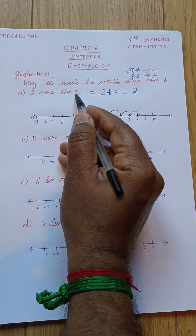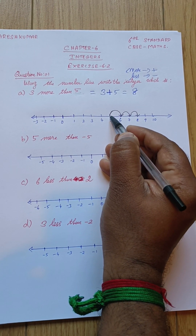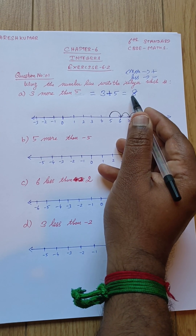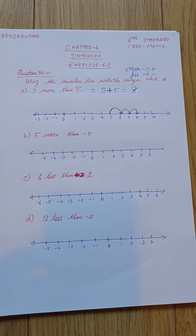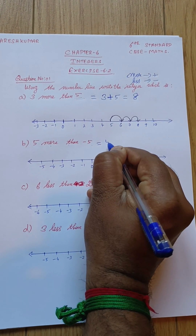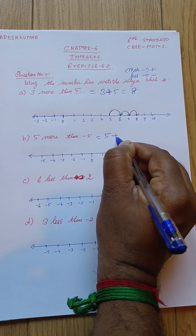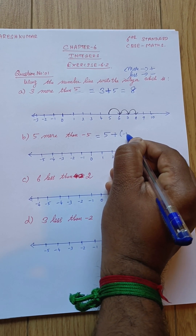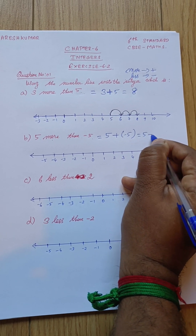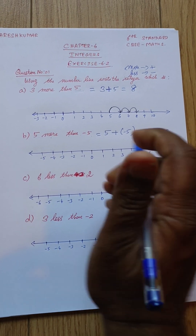According to this, the starting number five is the end of the given number, and from five only we need to start. So five to six, six to seven, seven to eight - that is the answer. Next: five more than minus five. Five more means plus, so minus five plus five equals zero.